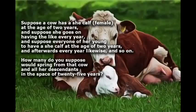Suppose a cow has a she-calf at the age of 2 years, and suppose she goes on having the like every year. And suppose every one of her young to have a she-calf at the age of 2 years, and afterwards every year likewise, and so on. How many do you suppose would spring from that cow and all her descendants in the space of 25 years?